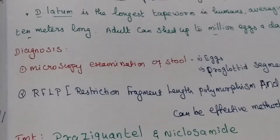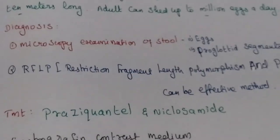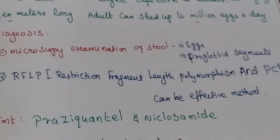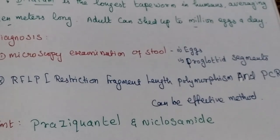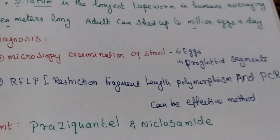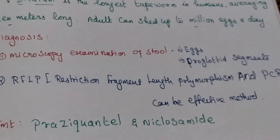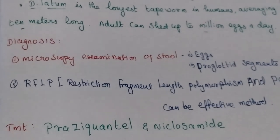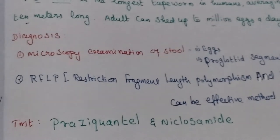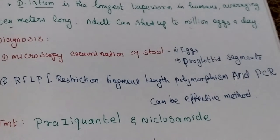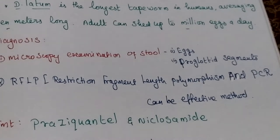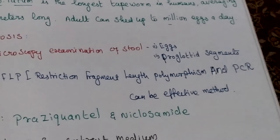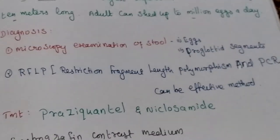Laboratory diagnosis involves microscopic examination of stool, where eggs and proglottid segments are observed using microscopic technique. RFLP (restriction fragment length polymorphism) and PCR are also used.